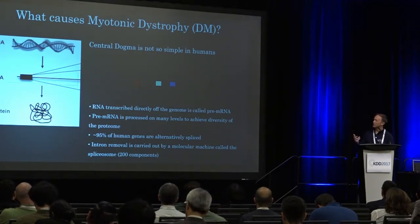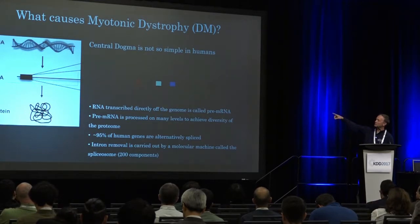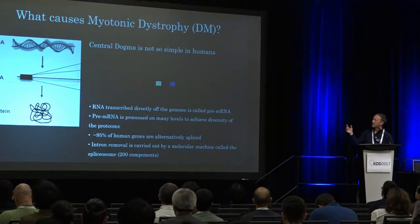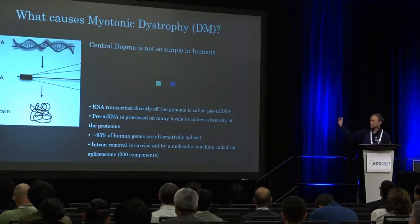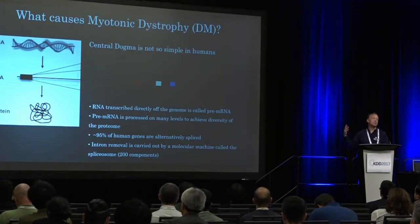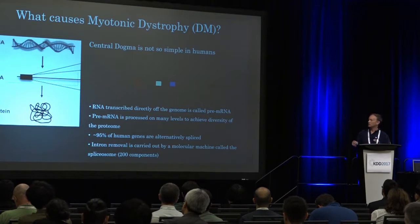That pre-mRNA is processed by splicing out little regions and pasting the remaining pieces together — that's what codes for protein. You can paste them in different orders or skip certain regions to make slightly different protein variants. With deep sequencing, we've realized about 95% of all our genes are alternatively spliced. One big surprise of the human genome published in 2003 was only 20,000–25,000 genes. But now we know those genes can be turned into hundreds of thousands of RNAs and proteins — a much deeper level of biology.